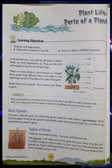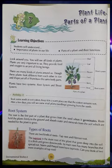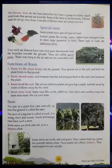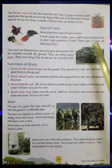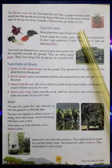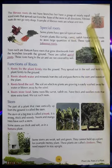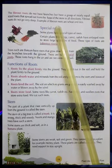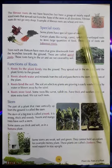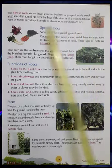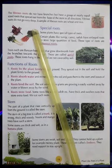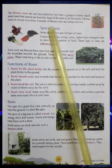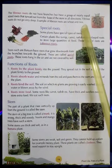Can you think of any two more examples of tap roots? Yes, there are many examples of trees that have tap roots. Fibrous roots don't have many branches but have a group of nearly equal-sized roots that spread out from the base of the stem in all directions. Fibrous roots do not go very deep. Examples of fibrous roots are wheat and rice.